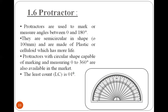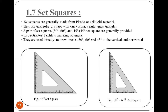The protractor is used to measure angles from 0 to 180 degrees. When developing a drawing of any component, it is necessary to use the protractor for drawing inclined lines at the correct angle to the horizontal. The least count for the protractor is 1 degree. There are two types of set squares: one is 45-45-90 degrees and another is 30-60-90 degrees, made up of plastic or celluloid. They are used to draw lines at 30, 45, and 60 degrees to the vertical and horizontal.